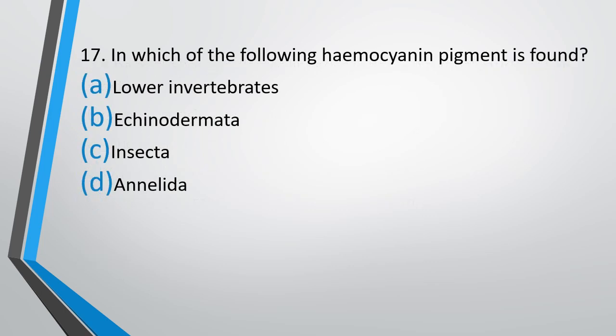Question number 17. In which of the following is hemocyanin pigment found? Option A, lower invertebrates; Option B, Echinodermata; Option C, Insecta; Option D, Annelida. In which of the following is hemocyanin pigment found? The correct answer is option A, that is lower invertebrates.